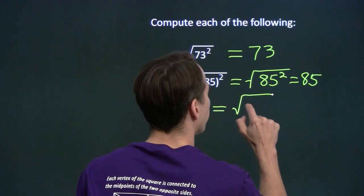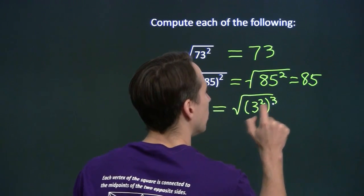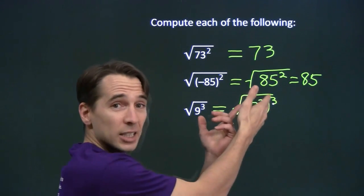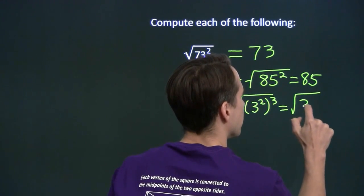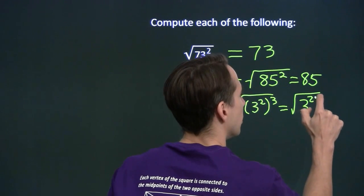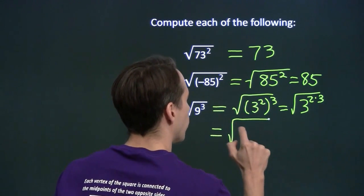So 9 is just 3 squared. And now I can use an exponent rule to put these two together. Put these two exponents together. This is 3 to the 2 times 3 power.